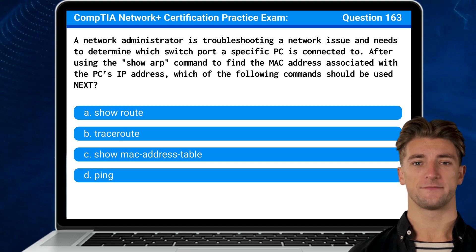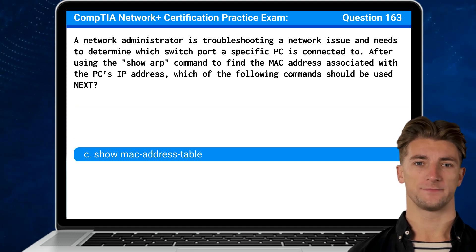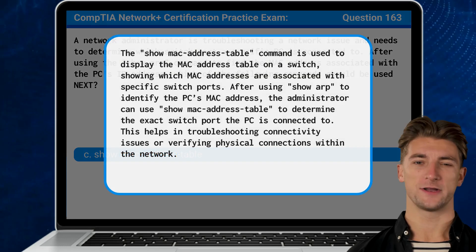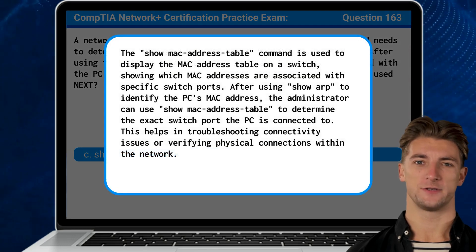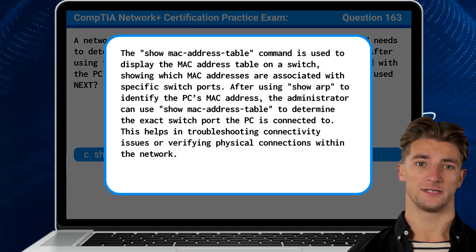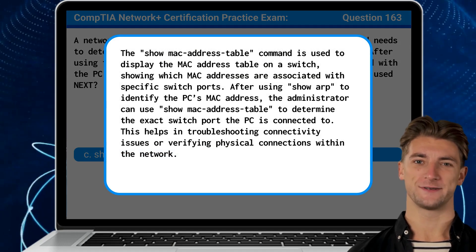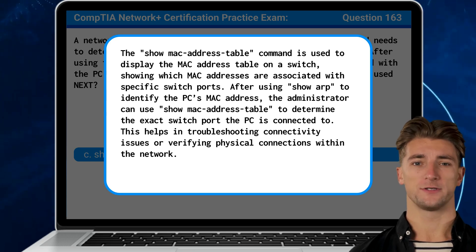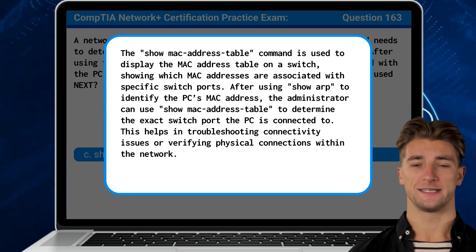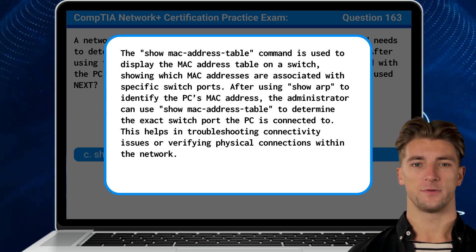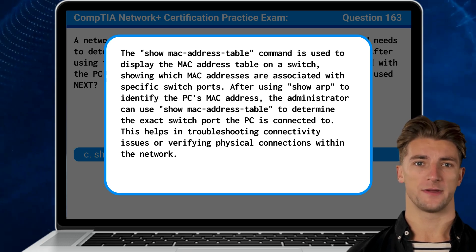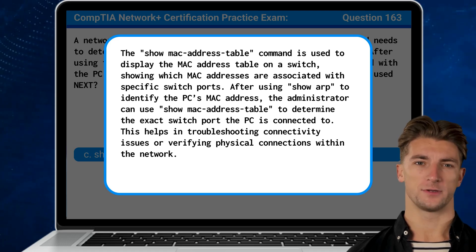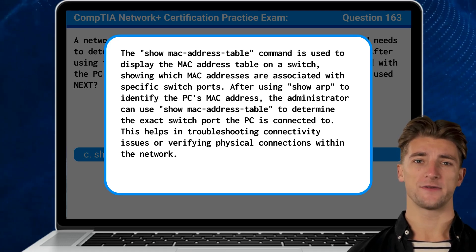The answer is C, show MAC address table. The show MAC address table command is used to display the MAC address table on a switch, showing which MAC addresses are associated with specific switch ports. After using show ARP to identify the PC's MAC address, the administrator can use show MAC address table to determine the exact switch port the PC is connected to. This helps in troubleshooting connectivity issues or verifying physical connections within the network.